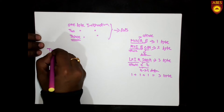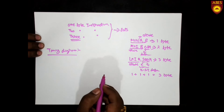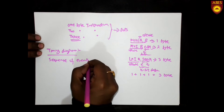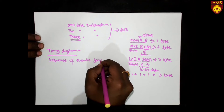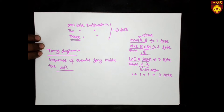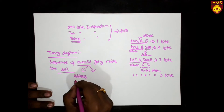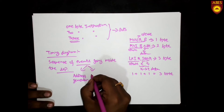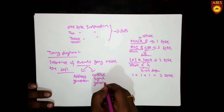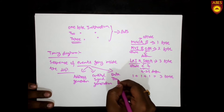So what is a timing diagram? It is the sequence of events going inside the microprocessor — sequence of events — which means address generation, control signal generation, and data transfer.